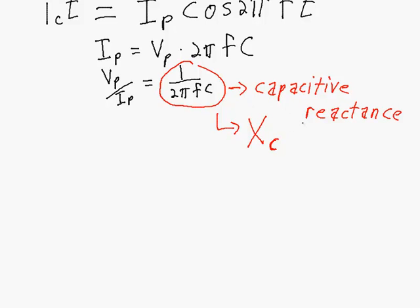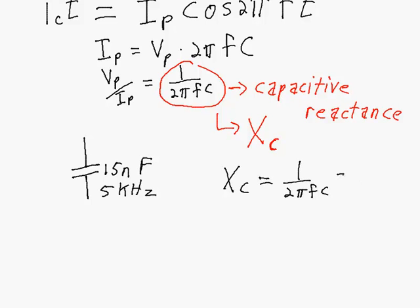Now we know the relationship between the peak voltage and the peak current. Before looking at the phase relationship, let's look at a few examples of capacitive reactance and how it varies with frequency. Say we have a 15 nanofarad capacitor and the frequency of a signal applied to it is 5 kilohertz. The capacitive reactance is equal to 1 over 2πfc — so 1 over 2π times 5k times 15 nanofarad — and that works out to 2,122 ohms. Voltage over current gives us the unit ohms; capacitive reactance is measured in ohms.